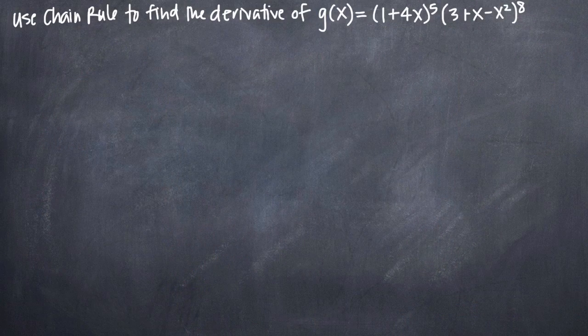In this particular problem, we've been asked to use chain rule to find the derivative of the function g of x equals the quantity 1 plus 4x to the 5th power times the quantity 3 plus x minus x squared to the 8th power. The first thing we need to realize is that not only will we need to use chain rule to solve this problem, we'll also need to use product rule.